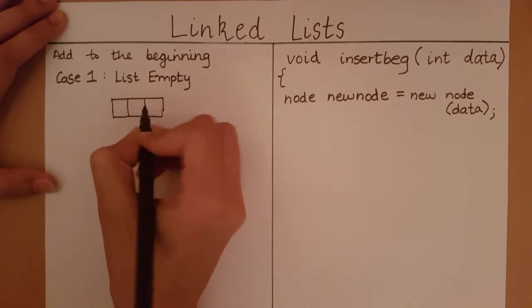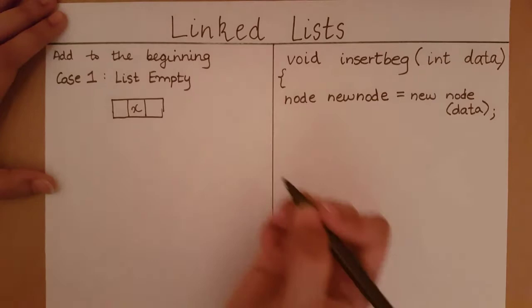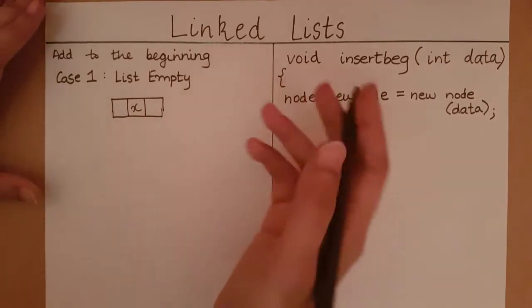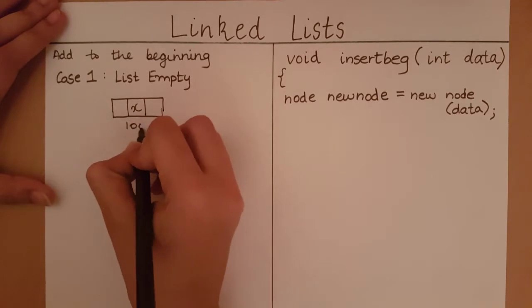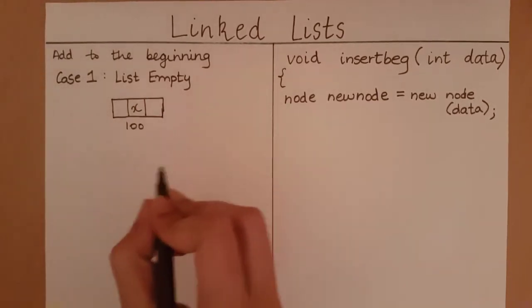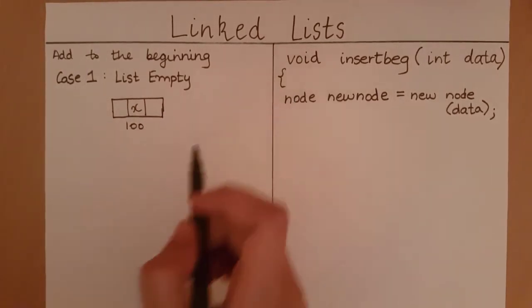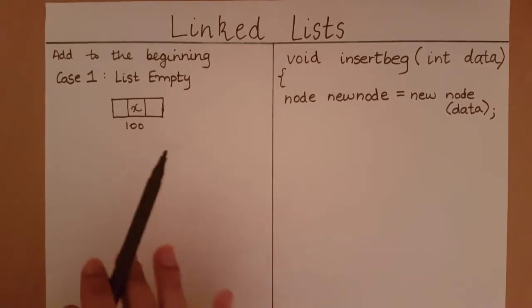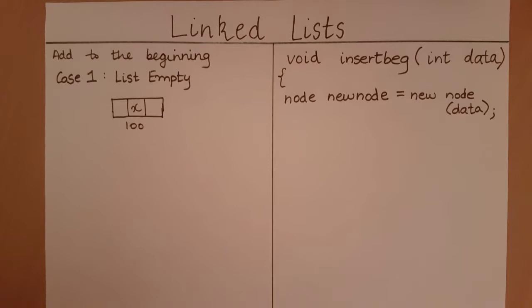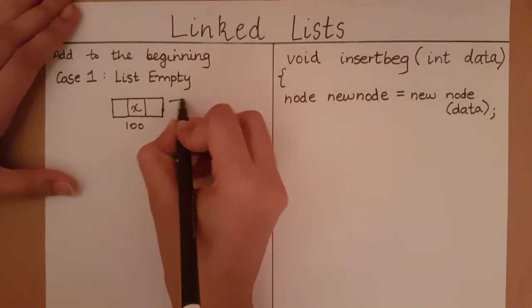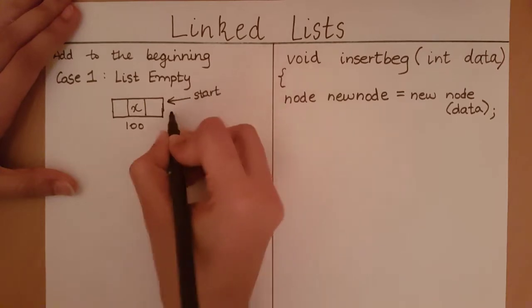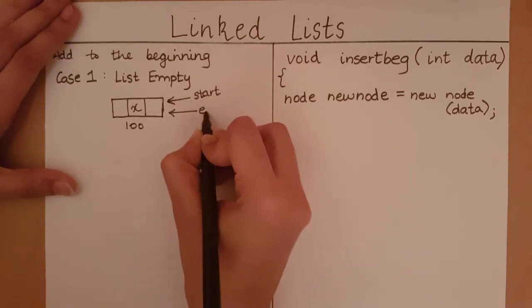So let's say this is the new node storing variable X. Let's say it is at the memory address 100. When I create this node and the list is empty this means this is the very first element or the very first node I am going to add to the list. In such a case I must initialize this as my starting node and I must initialize this as my ending node.